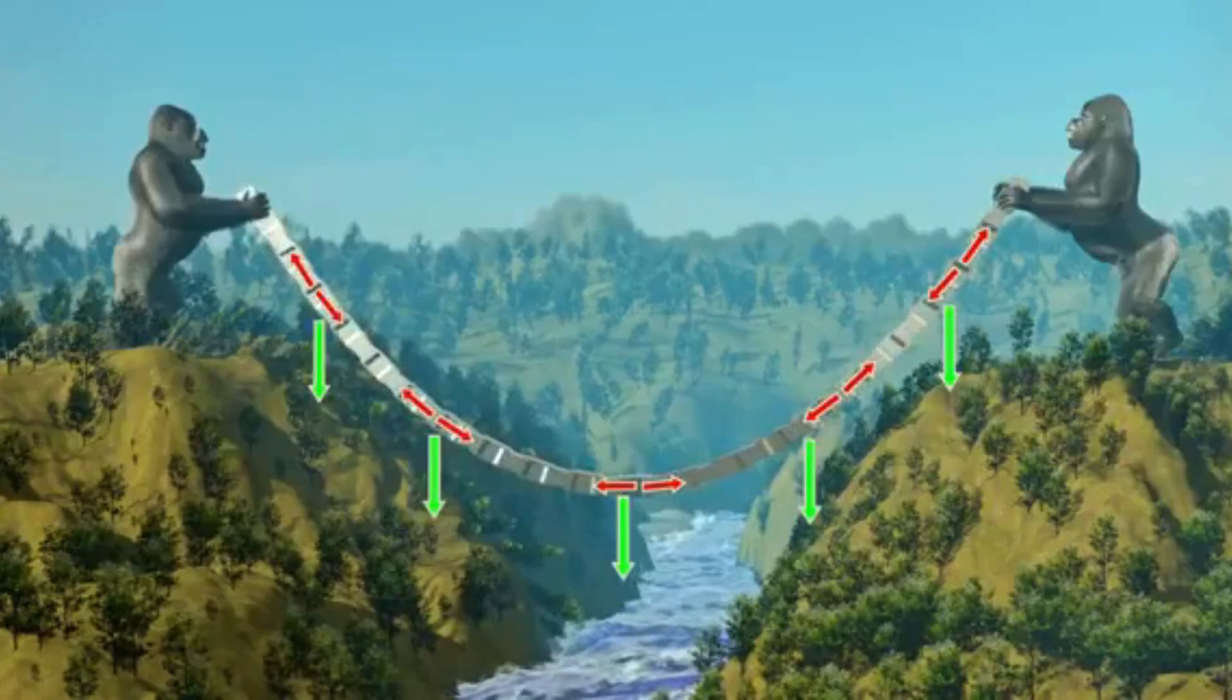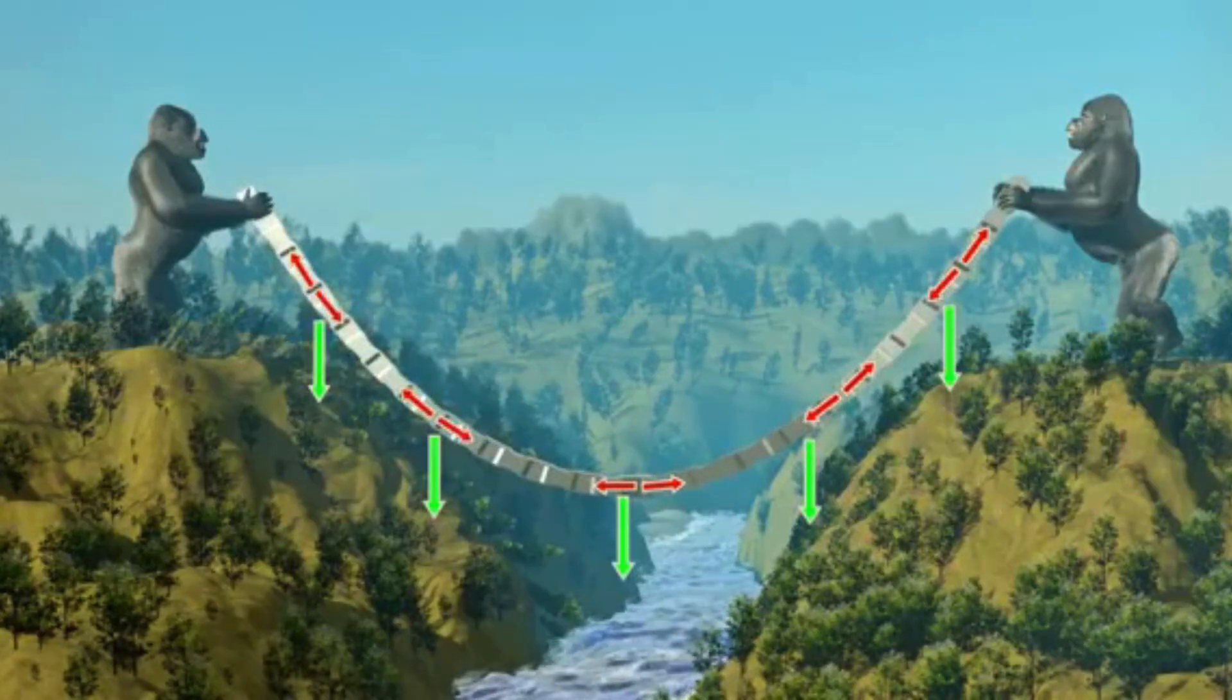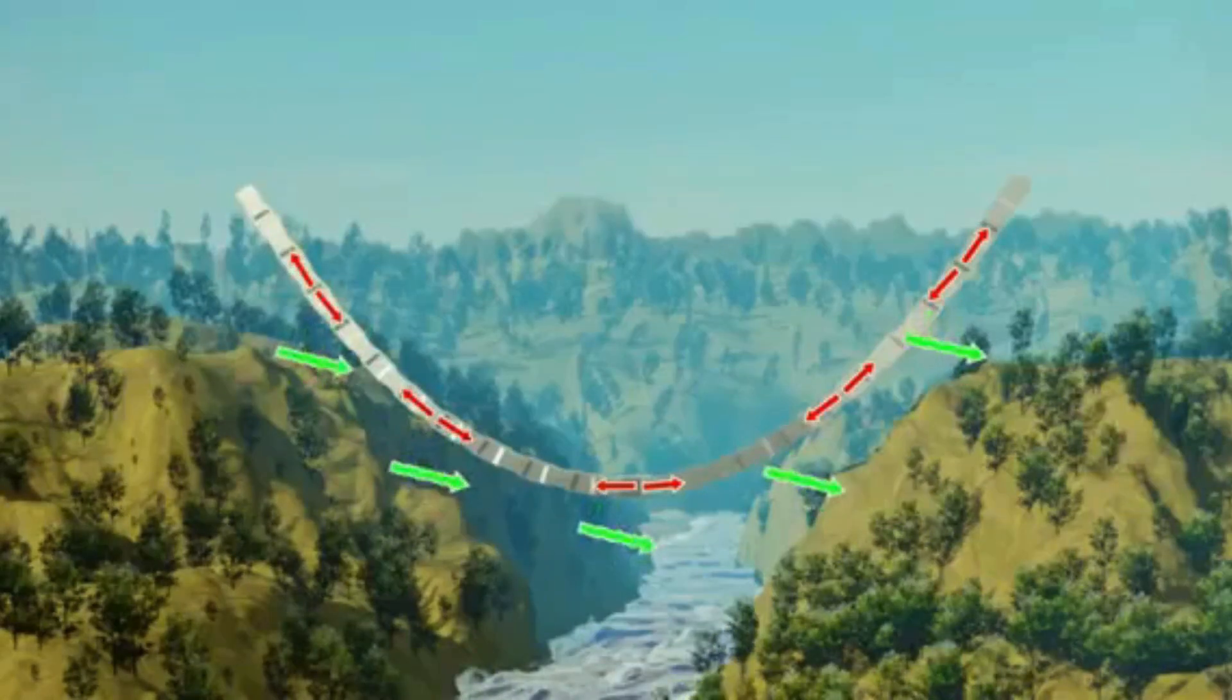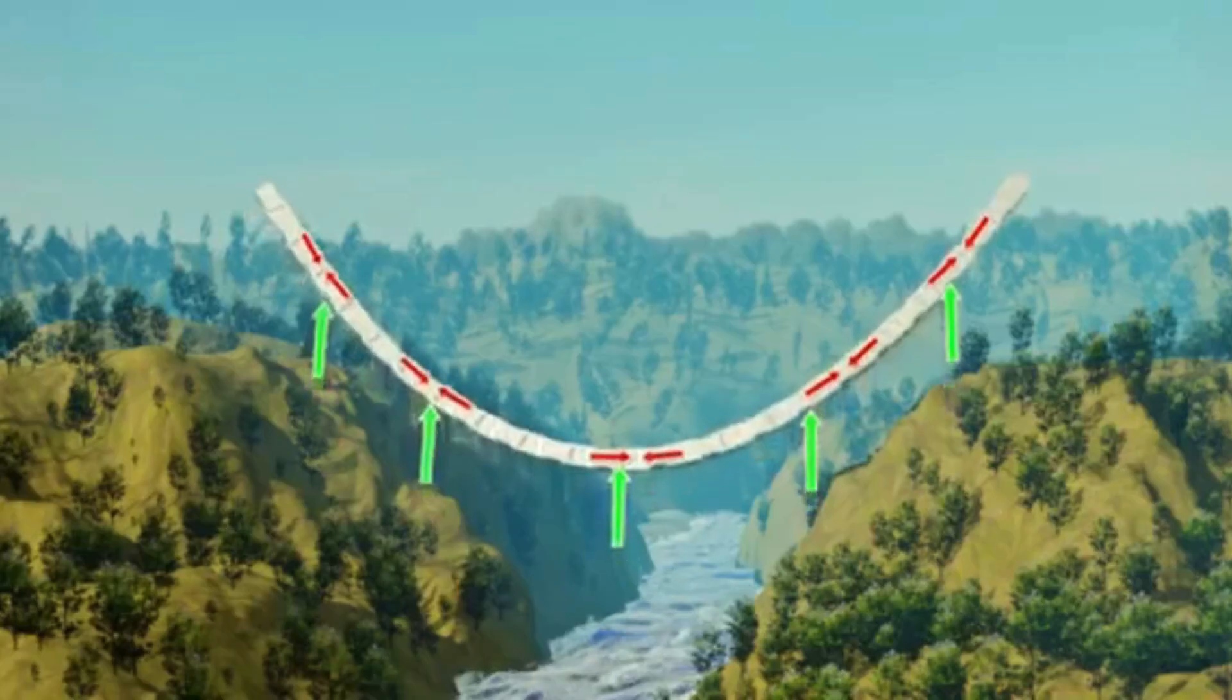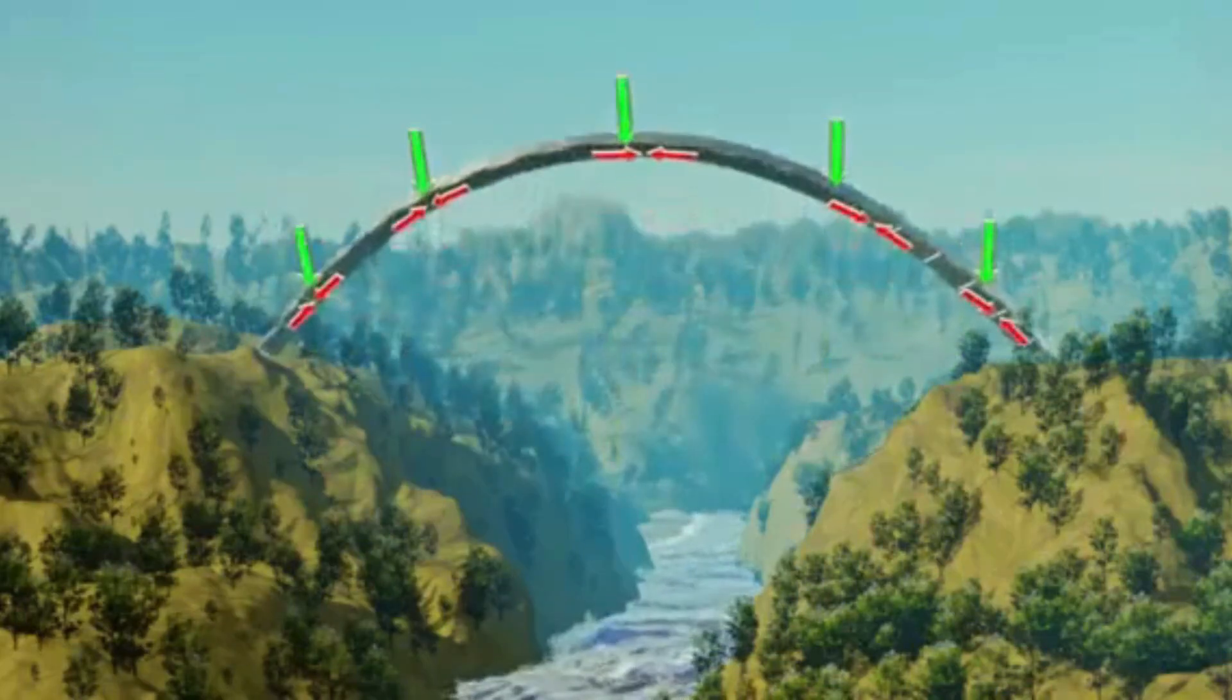Now the tricky part. Let's solidify this parabolic chain. Now let's flip the direction of the gravitational force. Since the external force has flipped its direction, the internal stress will also flip its direction and become purely compressive.